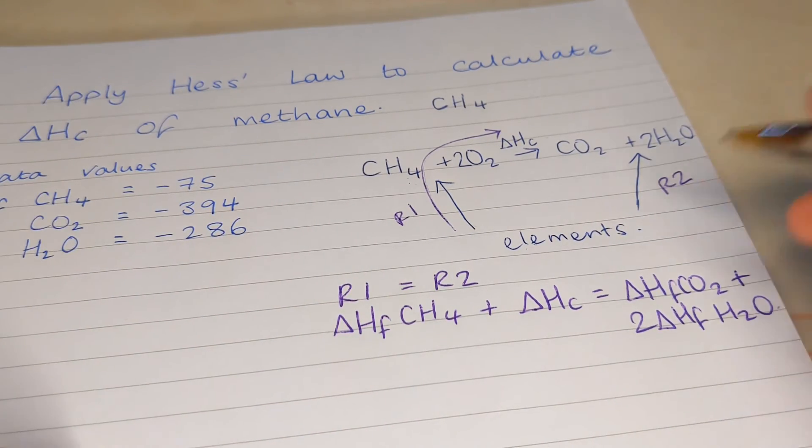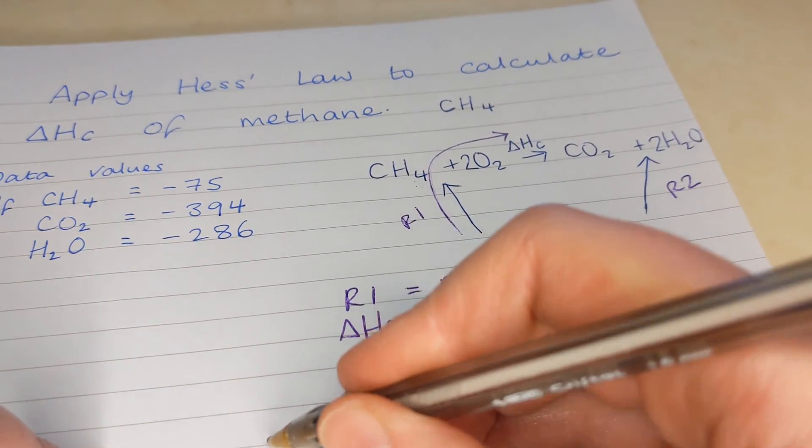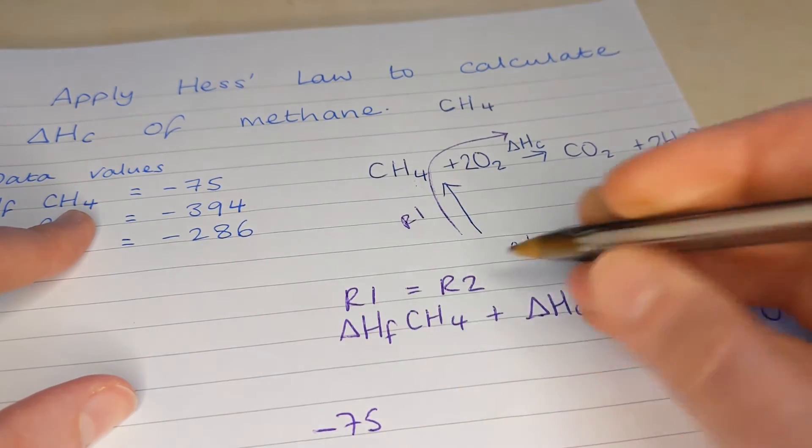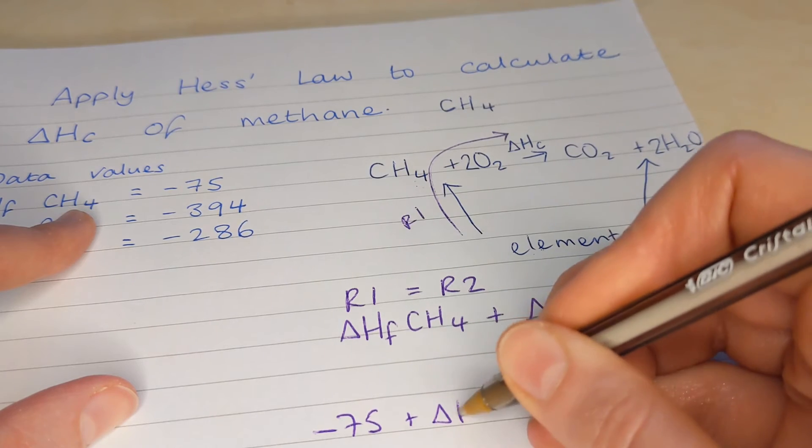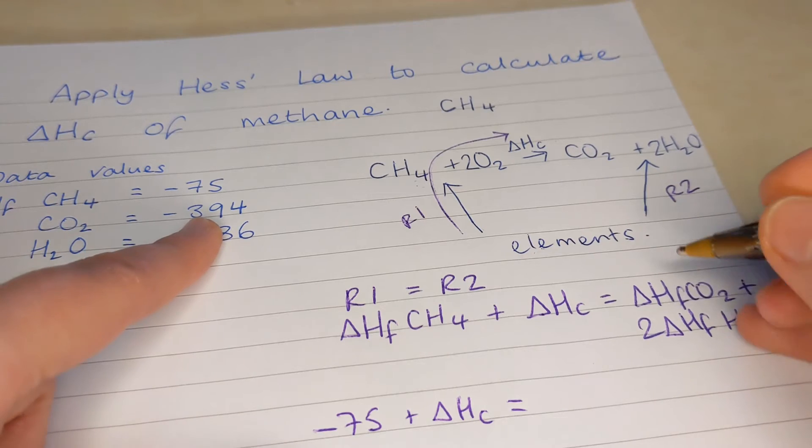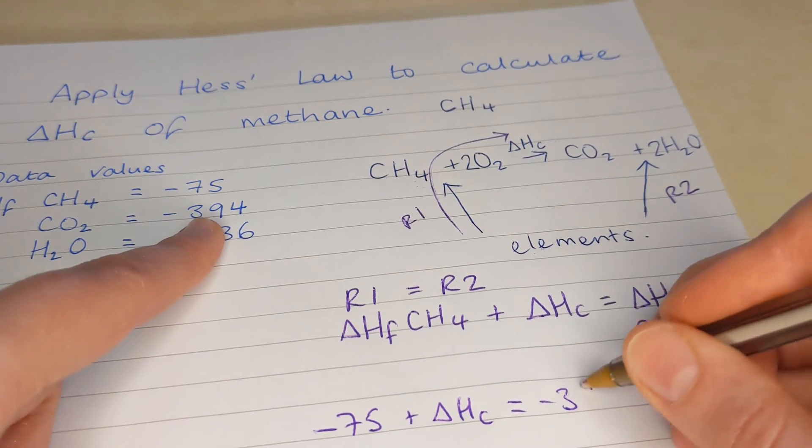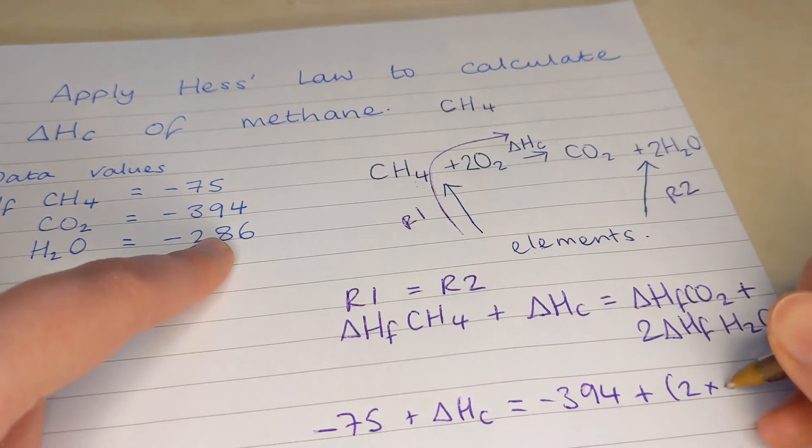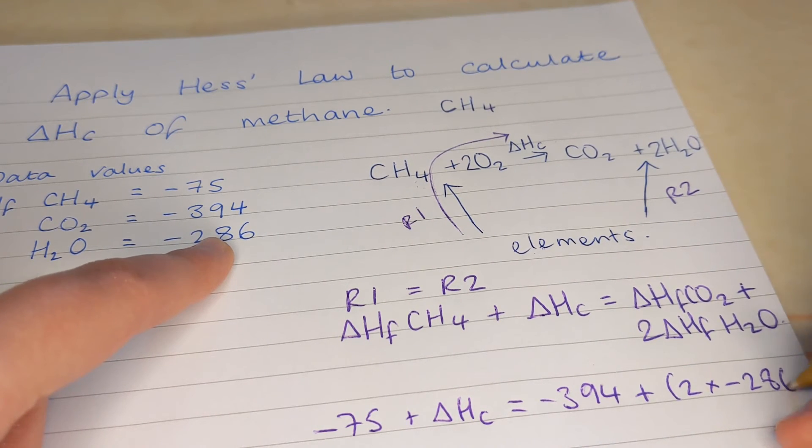Okay. So now let's put the numbers in. Delta H formation of methane is minus 75 plus delta HC. We don't know what that is. We're working that out. Is equal to formation of CO2 minus 394 plus two times minus 286 for the two waters.